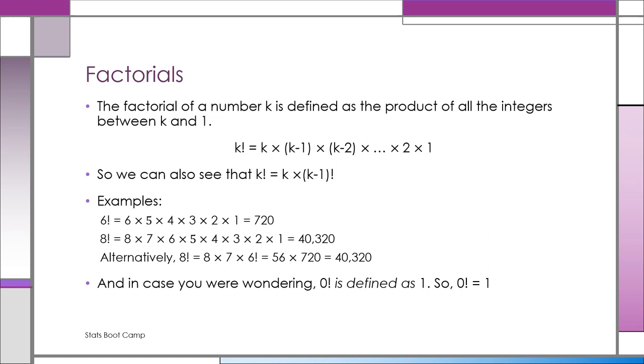Easiest to see with an example. Take a look at the examples. 6 factorial is equal to 6 times 5 times 4 times 3 times 2 times 1. And if you do all of those multiplications, you have 720.